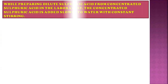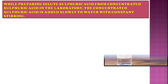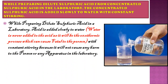The next question: when preparing dilute sulfuric acid from concentrated sulfuric acid in the laboratory, why is the concentrated sulfuric acid added slowly to water with constant stirring? Dilute means the amount of water is more. The acid is added slowly to water, and water is never added to acid, as that would be an exothermic process which can be fatal. If water is added directly to concentrated acid, a large amount of heat is produced, which is very dangerous.